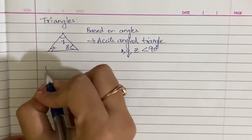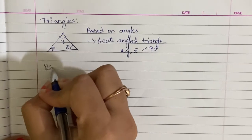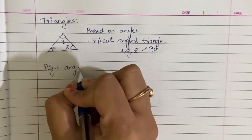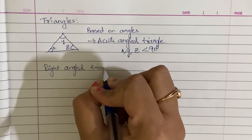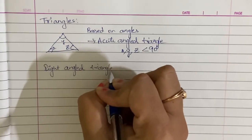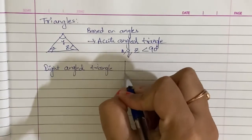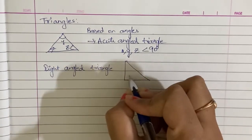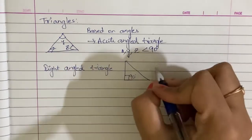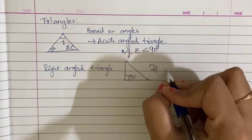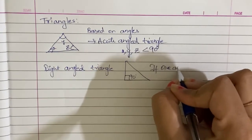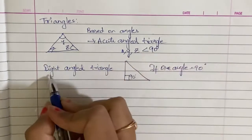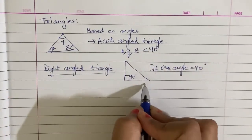Next, right angle triangle. If one angle is equal to 90 degrees, then it is a right angle triangle.